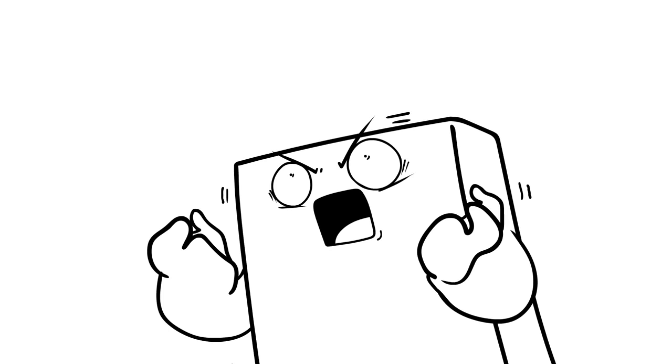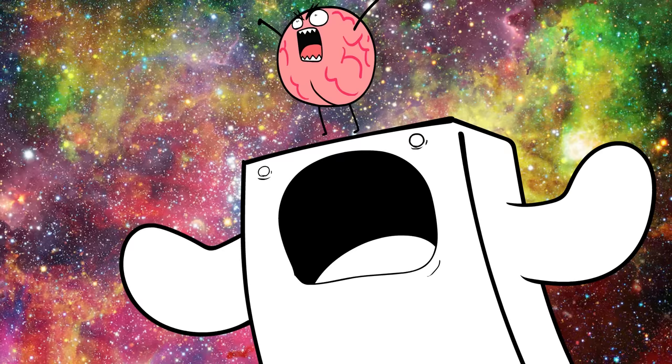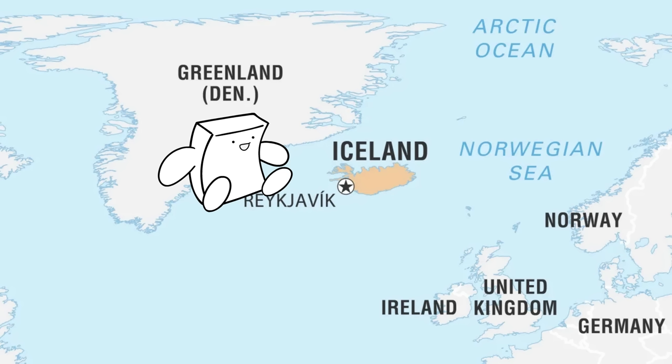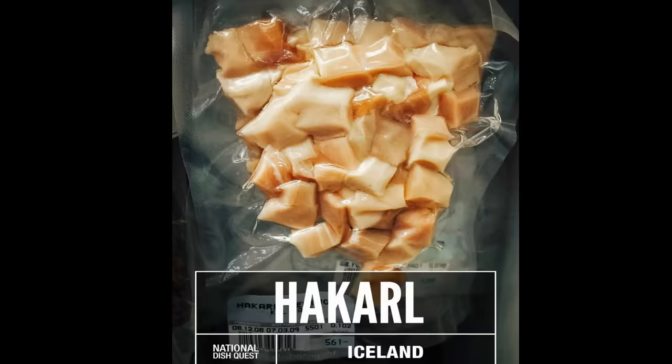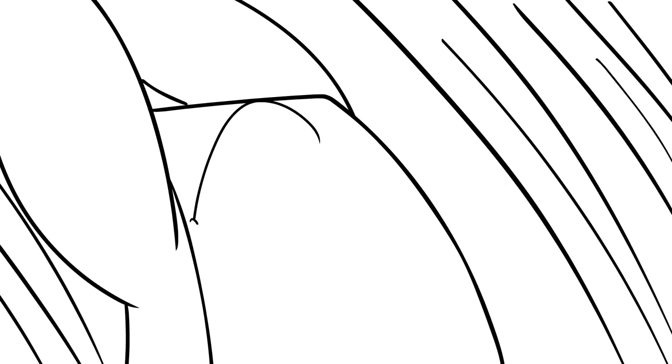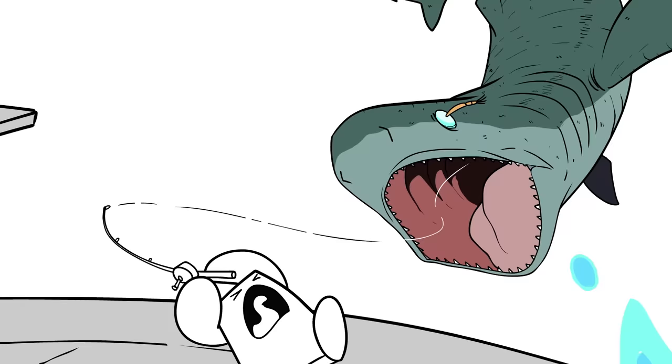The most mind-blowing out of all the mind-blowing foods I can think of is basically rotten shark. In Iceland, there is a delicacy known as hákarl. I really tried to pronounce it. I'm sorry.